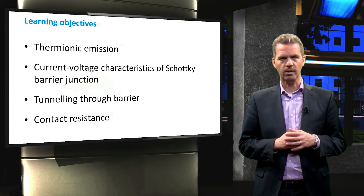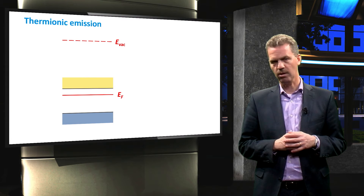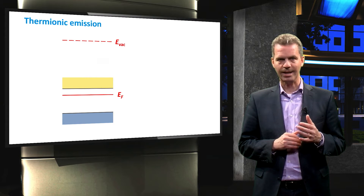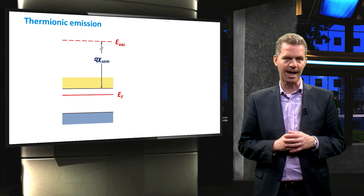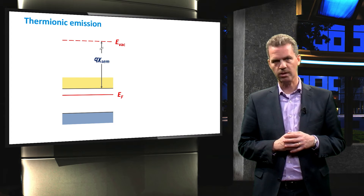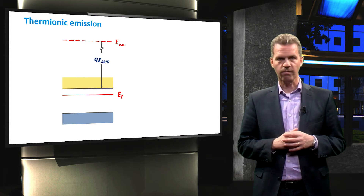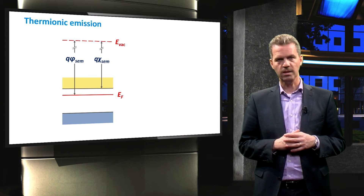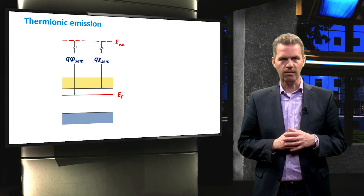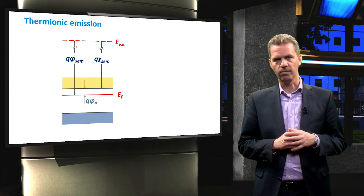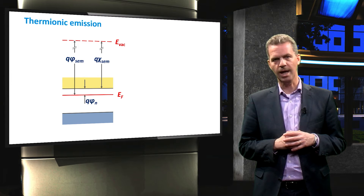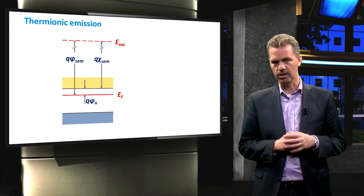Let us first have a look again at the band diagram of an n-type semiconductor. We have characterized this semiconductor by the electron affinity, defined as the energy difference between the vacuum level and the bottom of the conduction band, and the work function, defined as the energy difference between the vacuum level and the Fermi level. The energy difference between the bottom of the conduction band and the Fermi level is indicated by phi_n and is controlled by the dopant concentration.